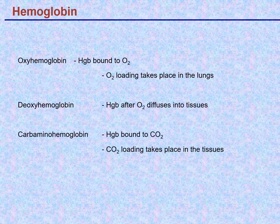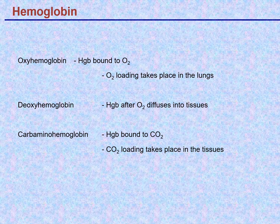Some terms used to characterize hemoglobin: if hemoglobin has oxygen bound to it, it's called oxyhemoglobin; if it's free of oxygen, it's called deoxyhemoglobin; and if it has CO2 bound to it, it's called carbaminohemoglobin. In practice, we typically talk about how saturated the hemoglobin is — whether it's fully or partially saturated with oxygen.